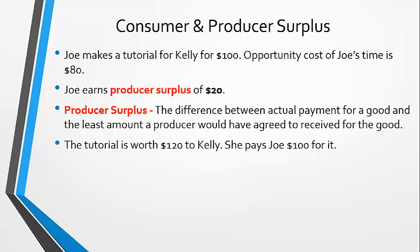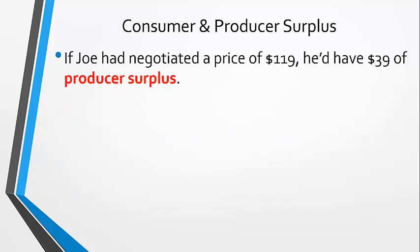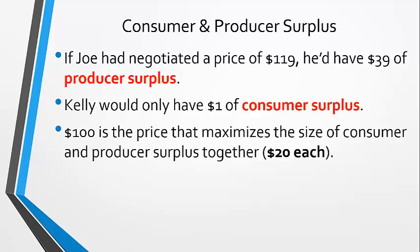The tutorial was worth $120 to Kelly, and she only paid Joe $100 for it, so Kelly earns consumer surplus of $20. Consumer surplus is the difference between the price paid for a good and what you were willing to pay for it. Notice how if Joe had negotiated a price of $119, he'd have a greater producer surplus, and Kelly would have a much smaller consumer surplus. But $100 is the price that maximizes the size of consumer and producer surplus together.